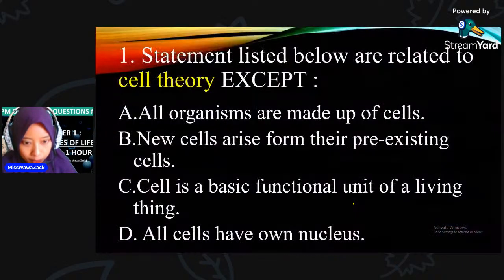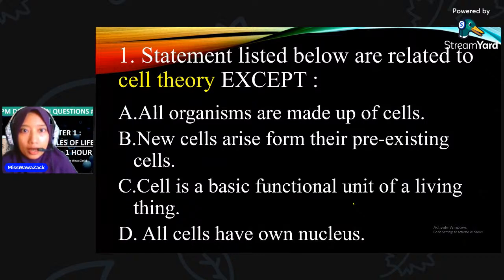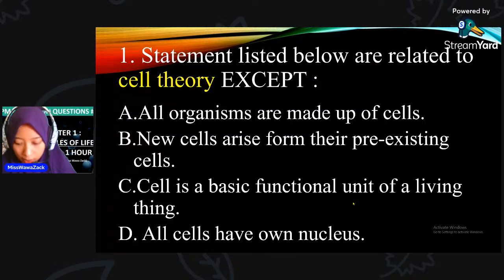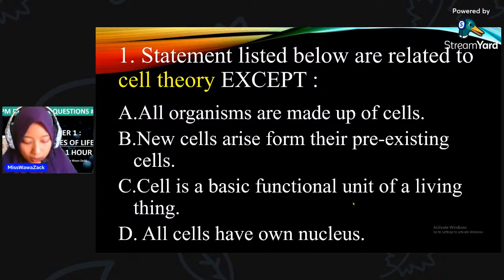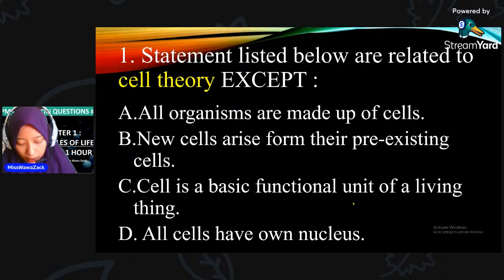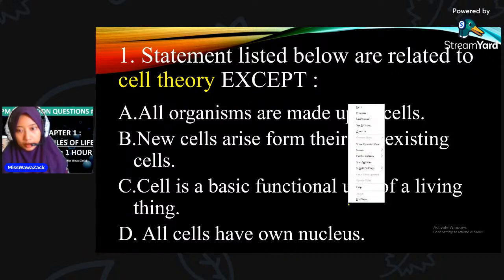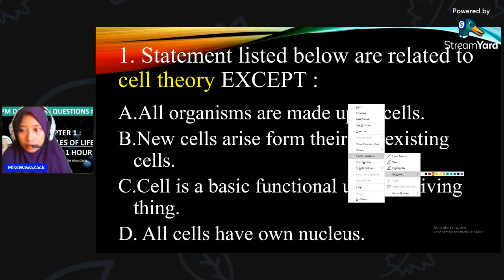Okay, soalan nombor satu. All right. Statement listed below are related to cell theory. So cell theory dia kata apa? All organisms are made up of cells. Ada tiga cell theory: All organisms are made up of cells; new cells arise from pre-existing cells; cell is a basic functional unit of a living thing; and all cells have nucleus. So, which is the answer? What is your answer?